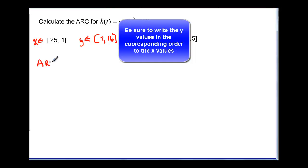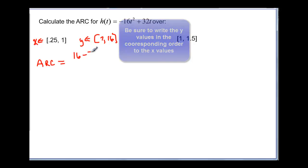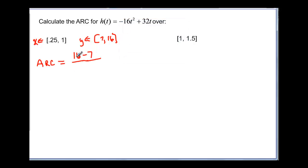So my average rate of change then here is going to be 16 minus 7 over, the 16 went with the 1, minus the .25. So we have 16 minus 7 which is 9, and 1 minus .25 which is .75, and that's going to be equal to 12.